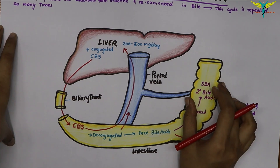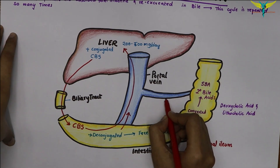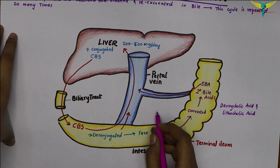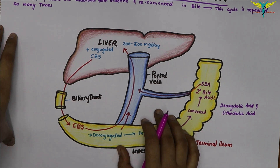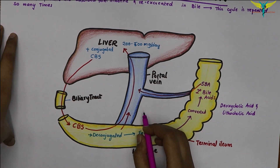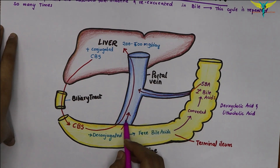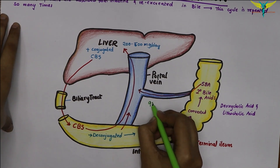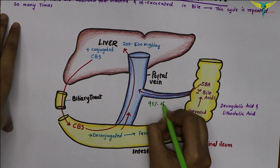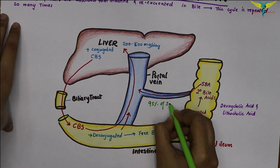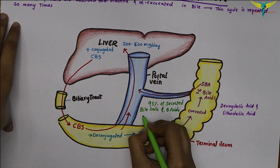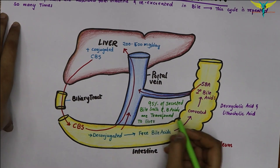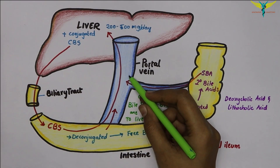These secondary bile acids are also reabsorbed into the portal circulation. From the gut, about 95% of the secreted bile salts and bile acids are transferred back to the liver via the portal circulation. Remember: about 95% of secreted bile salts and acids are transferred back to the liver via the portal circulation.